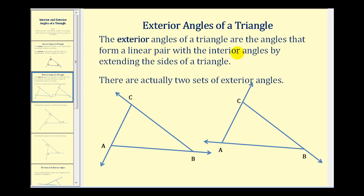The exterior angles of a triangle are the angles that form a linear pair with the interior angles by extending the sides of a triangle. There are actually two sets of exterior angles based upon which sides you extend. For example, at vertex C, on the left triangle we extended side BC through vertex C, and on the right triangle we extended side AC through vertex C. You can think of these extensions as going counterclockwise versus clockwise.